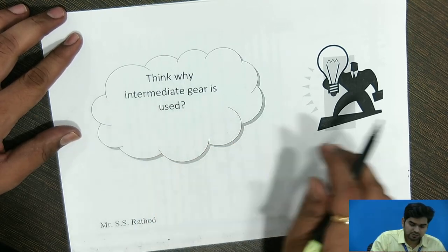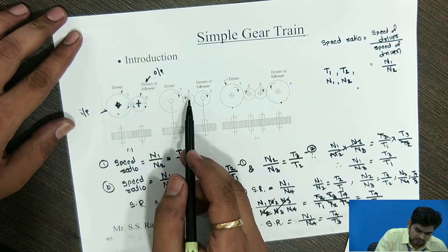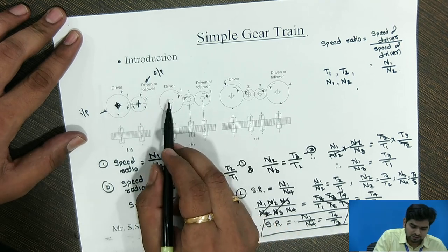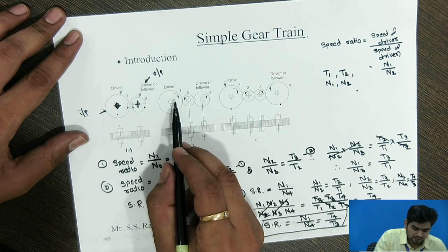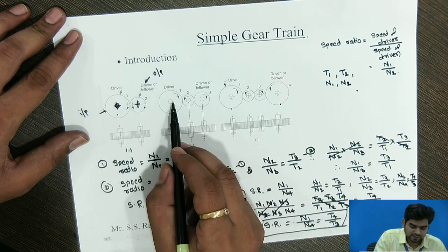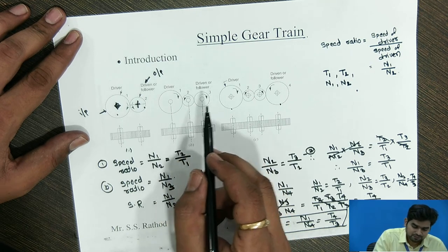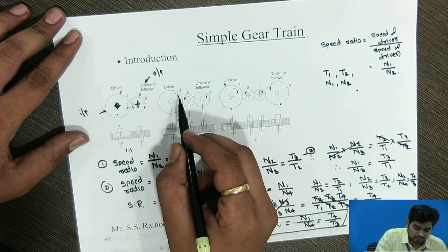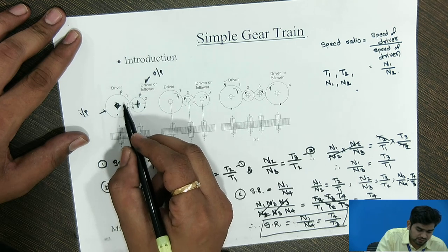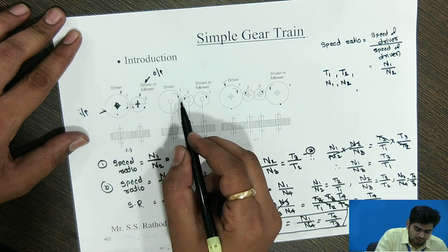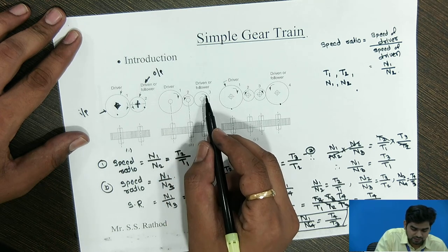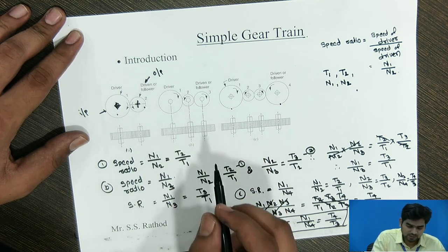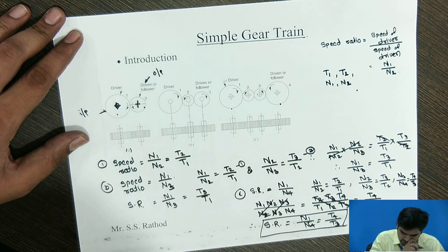Why is the intermediate gear used? The intermediate gear does not affect the speed ratio. It is used when the distance between the driver gear and the driven gear is large — to connect them. There are two uses of the intermediate gear: for changing the direction of rotation of the output gear, and for increasing the distance between the two gears.